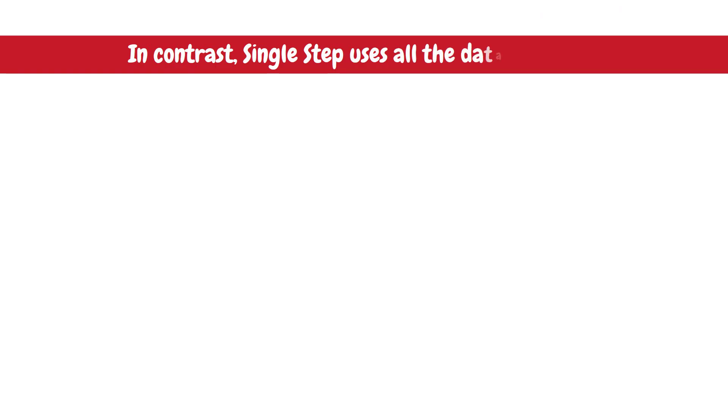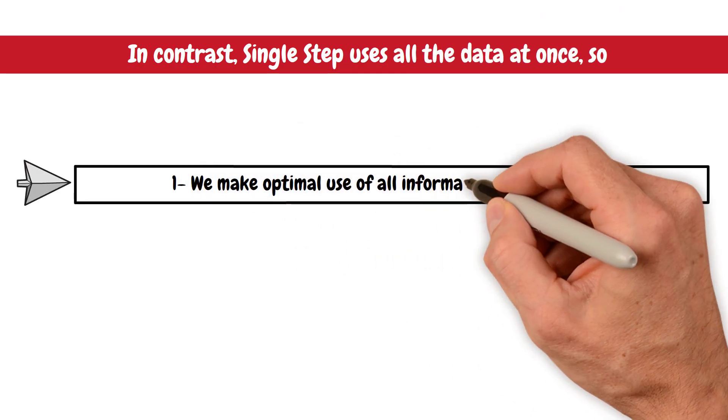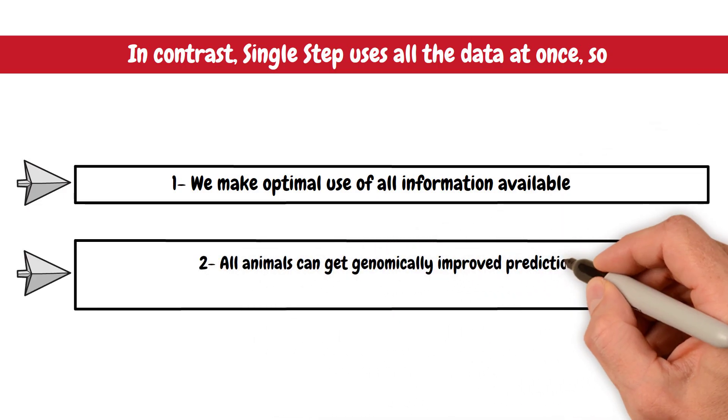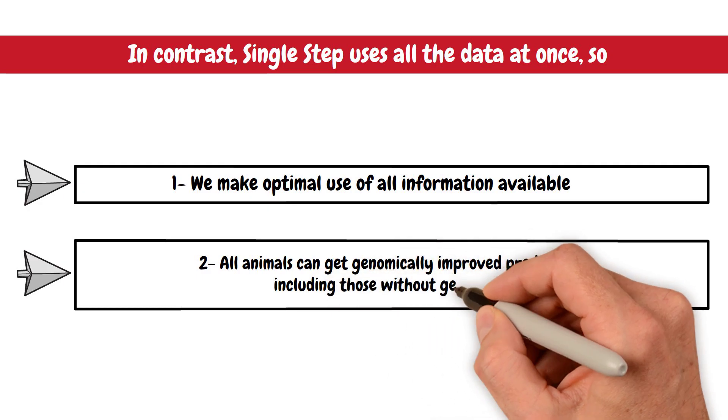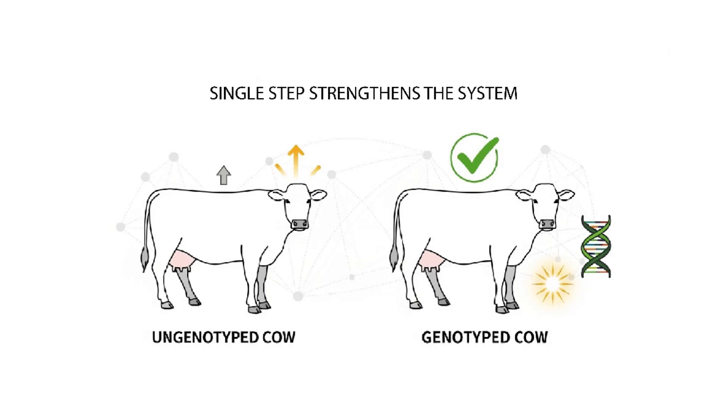In contrast, single-step uses all the data at once. So, 1. We make optimal use of all information available. And 2. All animals can get genomically improved predictions, including those without genotypes. The genomic data in single-step strengthens the entire system, and even un-genotyped animals benefit.